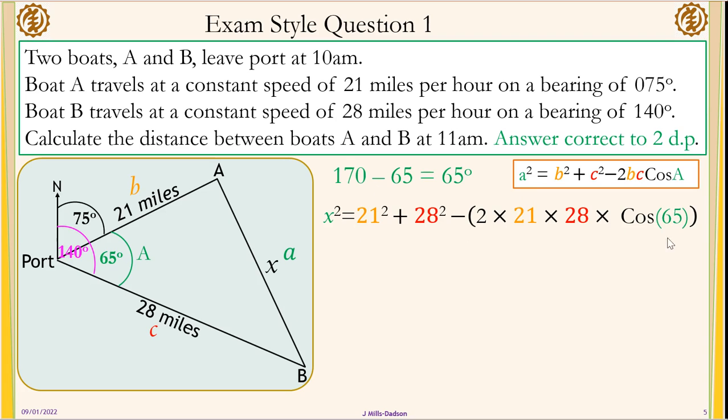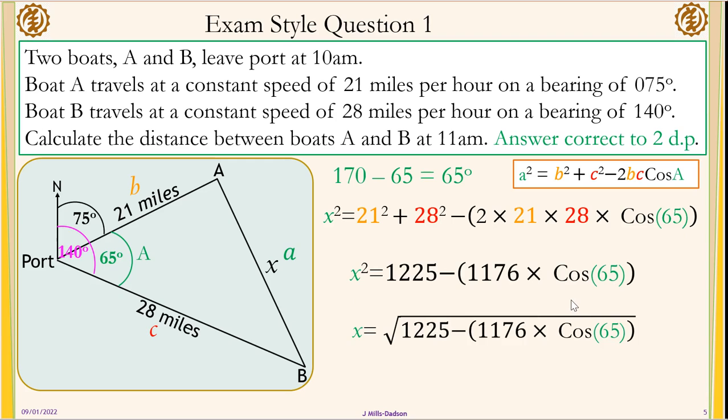So you can use square root of everything to get your answer for the next step, or go step by step. It is up to you. So you work this out. This is what you have. And the answer is 26.98 miles.